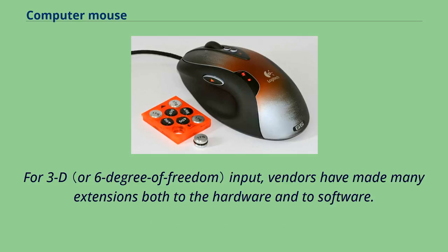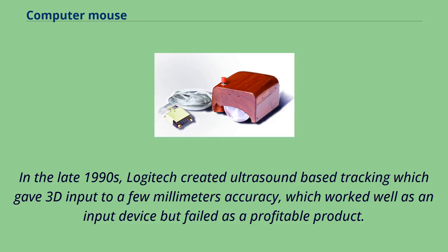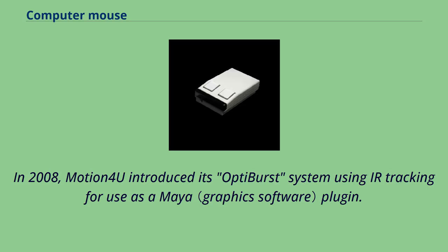For 3D input, vendors have made many extensions to both hardware and software. In the late 1990s, Logitech created ultrasound-based tracking giving 3D input to a few millimeters accuracy, which worked well as an input device but failed as a profitable product. In 2008, Motion 4U introduced its OptiBurst system using IR tracking for use as a Maya plugin.